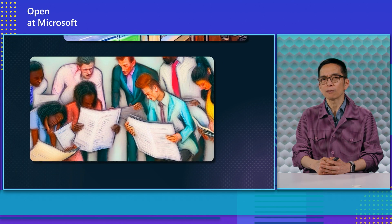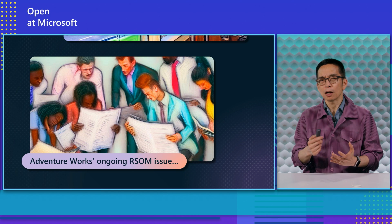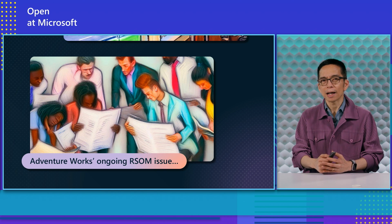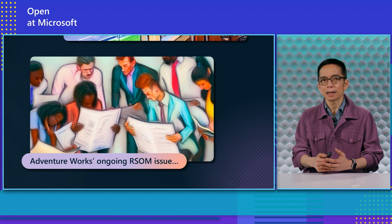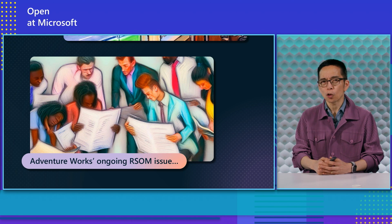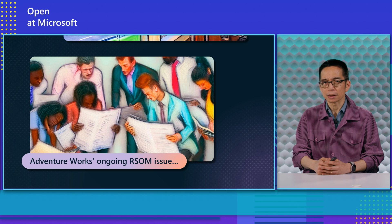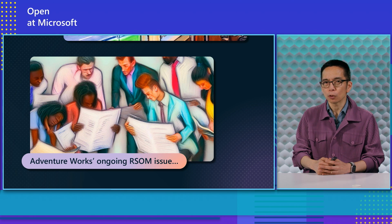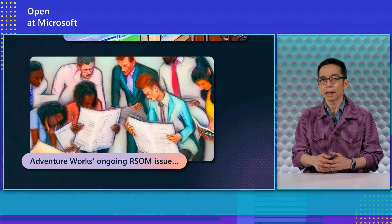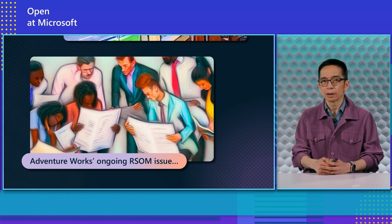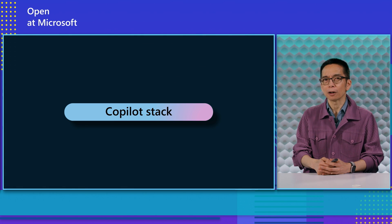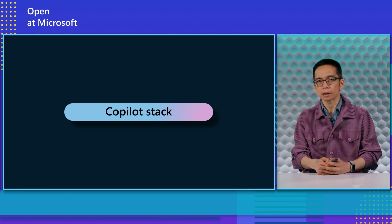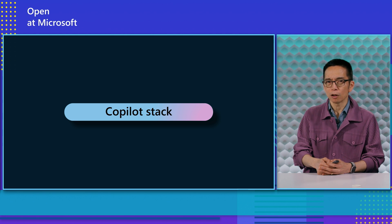And the one thing they want to fast-track is this common problem at Blake's company: taking the famous store operations manual — 10,000 pages — and making it easy for any employee to onboard with a co-pilot for that. The co-pilot stack is something you heard about at Build from Kevin Scott, CTO of Microsoft.